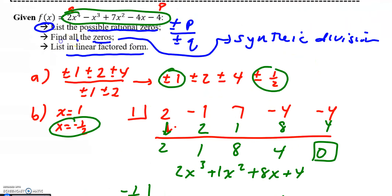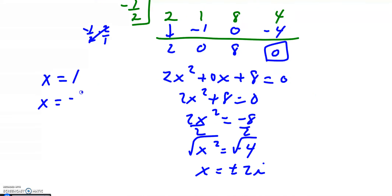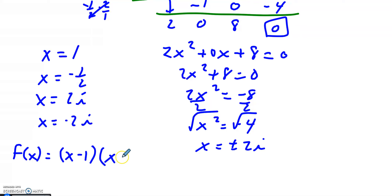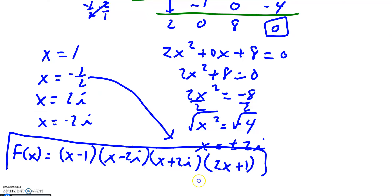For part c, listing all in factored form: my roots are 1, negative one half, 2i, and negative 2i. My function in factored form would be x minus 1, times x minus 2i, times x plus 2i, times 2x plus 1. Note that negative one half comes from 2x plus 1 because setting that equal to zero and solving gives x equals negative one half. So this is your answer in factored form.